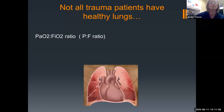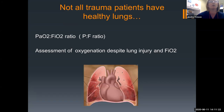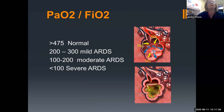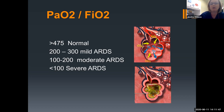The PF ratio is really cool because it doesn't matter if you're on oxygen, on a ventilator, or on room air — the ratio stays the same and translates meaning no matter what's going on with your patient. It's truly an assessment of oxygenation despite the injury and regardless of your FiO2. The math is simple: take your PaO2 divided by your FiO2. A PF ratio over 475 indicates normal lungs. Between 200 and 300 is mild ARDS, 100 to 200 is moderate, and less than 100 indicates severe ARDS.